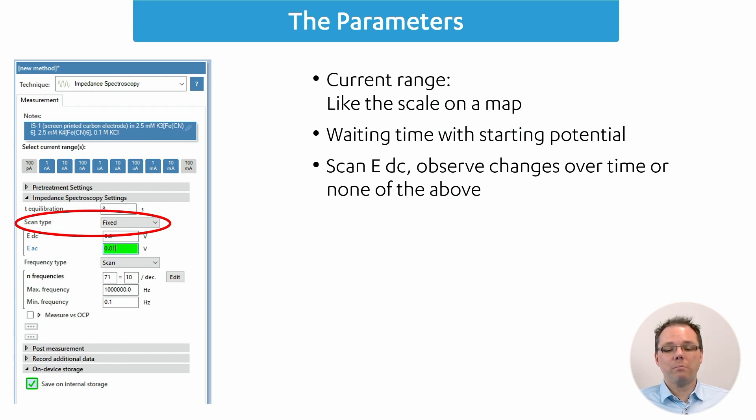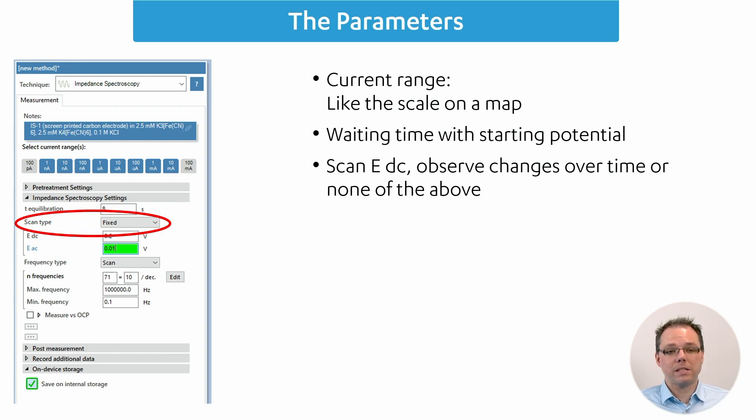Most of the time when people choose here a scan option, they also want to fix the frequency and then follow the impedance over time, or want to see the change of impedance if they change the EDC. Usually the scan type fixed is the classic way of doing impedance spectroscopy.